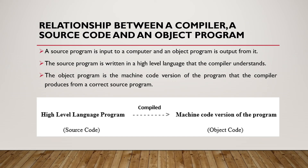Regarding the relationship between a compiler, source code, and object program: a source program is input to a computer and an output program is output from it. The source program is written in a high-level language that the compiler understands. The object program is a machine code version of the program that the compiler produces from a correct source program.